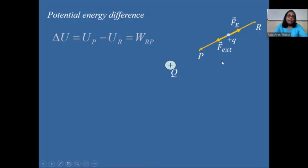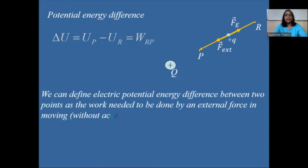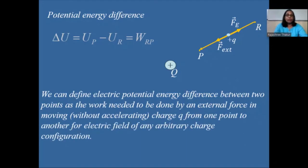The external force is exactly equal and opposite to F_e, meaning there is no net force acting on the charge while it moves from R to P. That means we are bringing the charge from R to P without acceleration. Therefore, we can define electric potential energy difference between two points as the work needed to be done by an external force in moving charge Q from one point to another for the electric field of any arbitrary charge configuration.